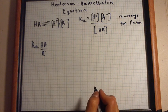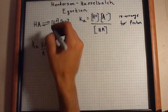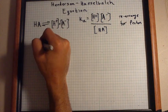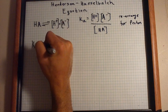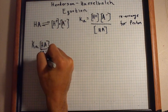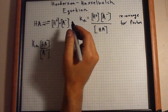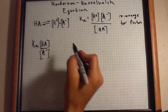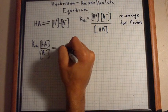I apologize, I should not be saying HA and A. This is the acid dissociation constant times undissociated acid divided by conjugate base, is equal to proton concentration.